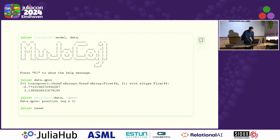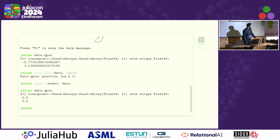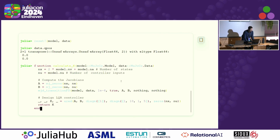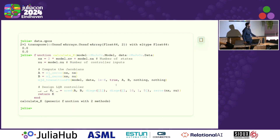Before we get started, I'll reset everything to default values — and if we check the qpos array again, it's reset to zero. To save time, I'll paste in a function; there's also a guide in the documentation. The model object is used just like a normal Julia struct, and you have access to all of its properties.